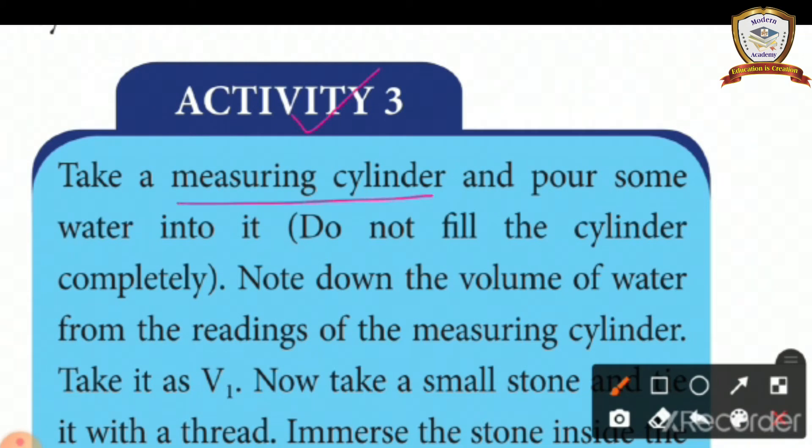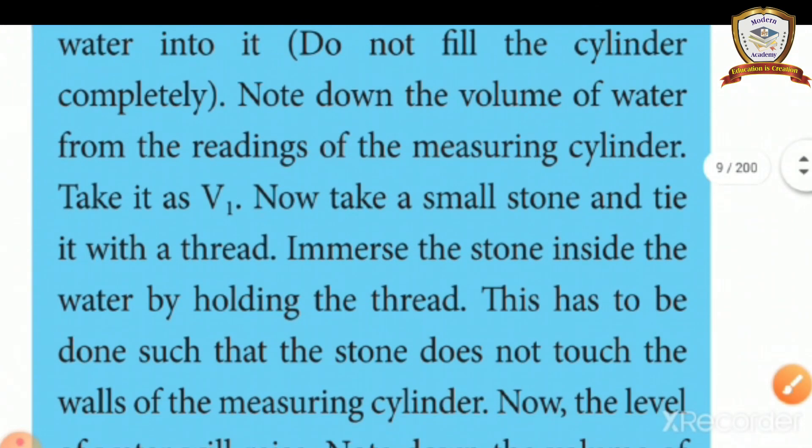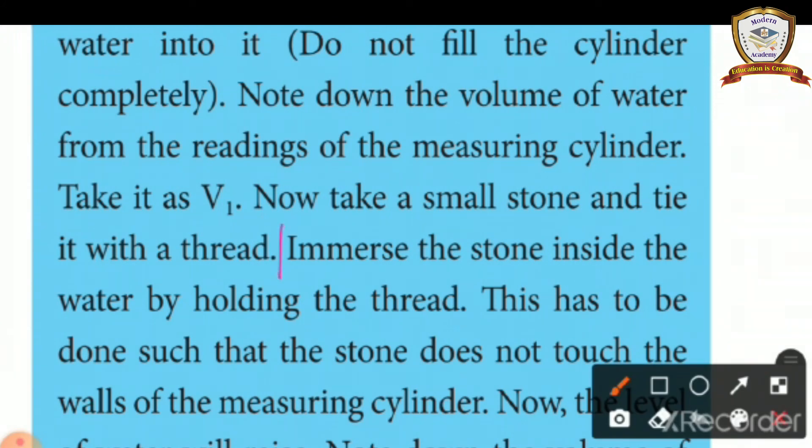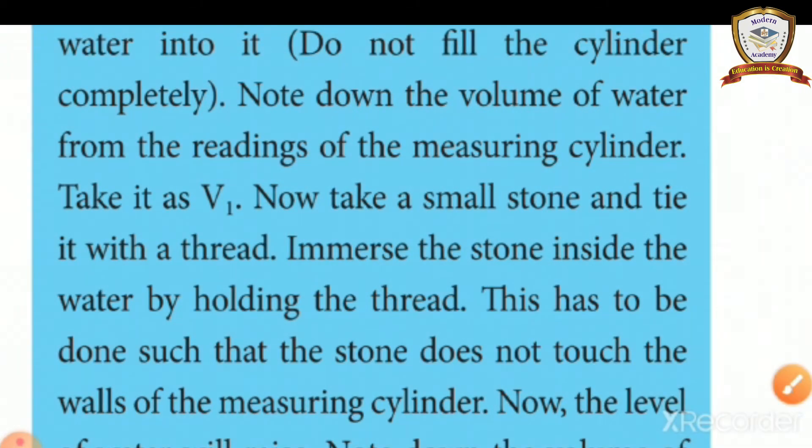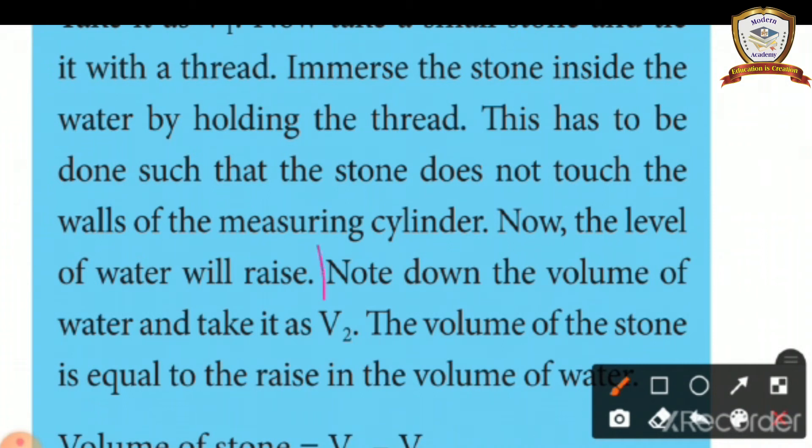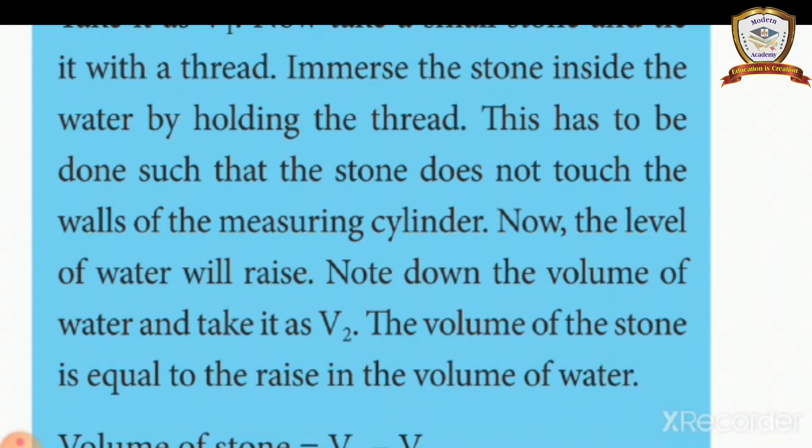Take a measuring cylinder and pour some water into it. Do not fill the cylinder completely. Note the volume of water from the readings of the measuring cylinder. Take it as V1. Now take a small stone and tie it with a thread. Immerse the stone inside the water by holding the thread. This has to be done such that the stone does not touch the walls of the measuring cylinder. Now the level of water will rise. Note down the volume of water and take it as V2. The volume of the stone is equal to the rise in the volume of water.